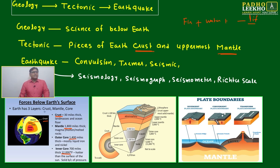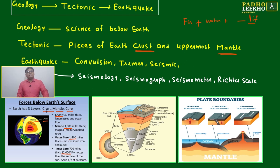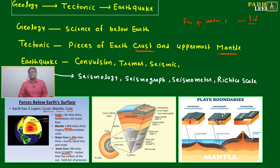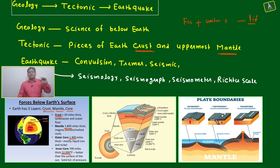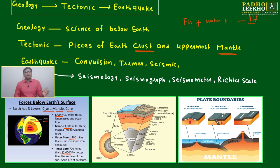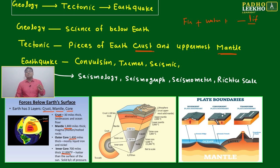Earth has mainly three layers: crust, mantle, and core. You can remember this as CMC — crust, mantle, core. The core is further divided into two parts: outer core and inner core. Keep this structure in mind.